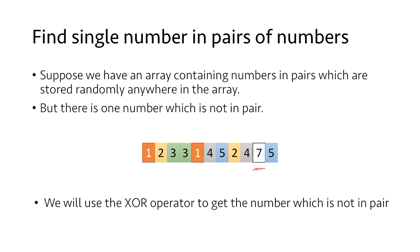We will use the XOR operator to get the number which is not in pair. Now let's take an example to understand how to use XOR operator to find the number not in pair. Let's take an array of 3 integers which are 3, 2, and 3. The number 3 is in pair and the number 2 is not in pair.